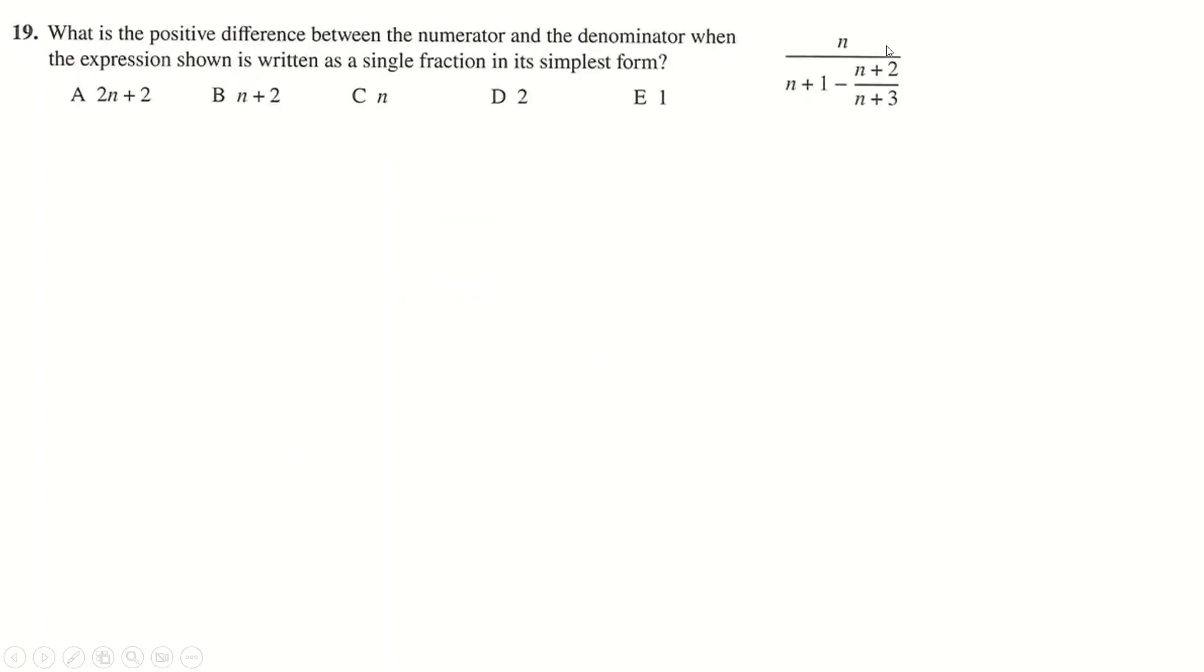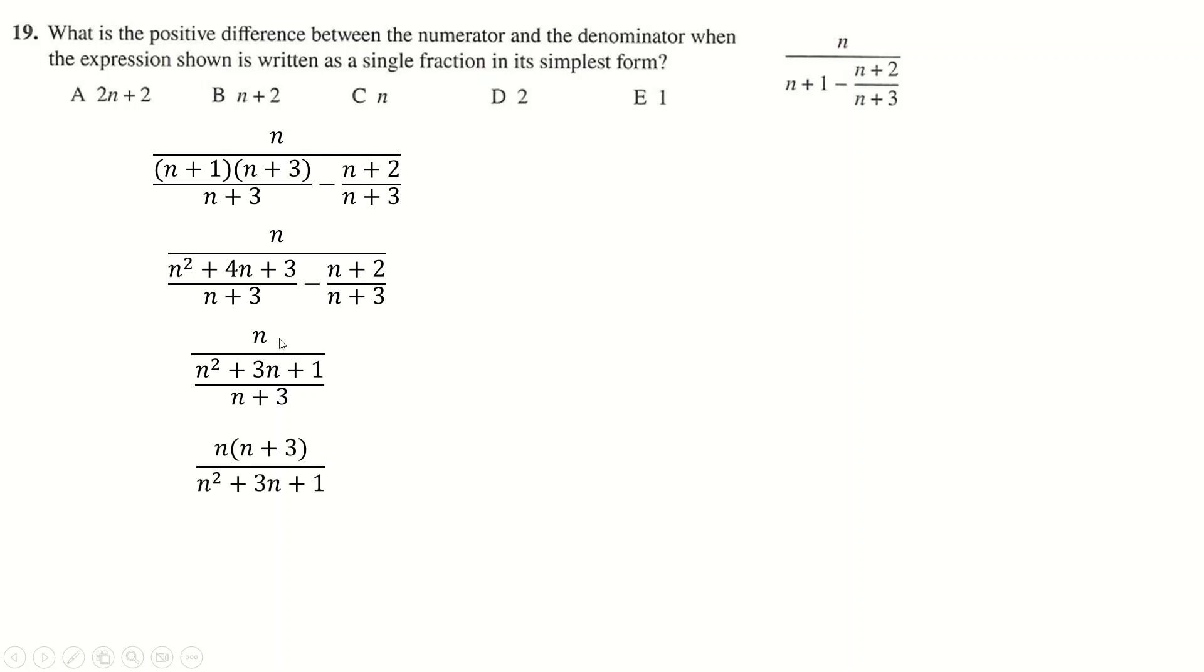Question 19. So this is the kind of question that you just pray for on Math Challenges. It's literally just some algebra. So times this by n plus 3, n plus 3. And then we can collect these two things together. Expand that out. So minus n and then minus 2 from this. And now when you've got a three-tier fraction like this, this one here just goes onto the top to make this. Expand it out. And the difference between the numerator and the denominator is just this one here. And we have our answer.